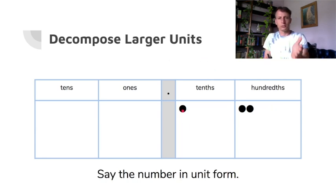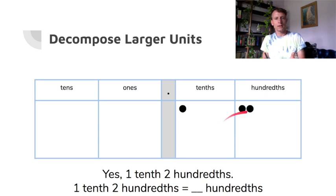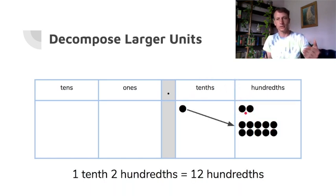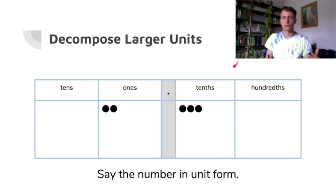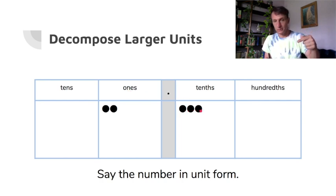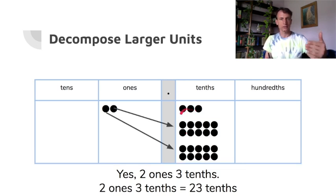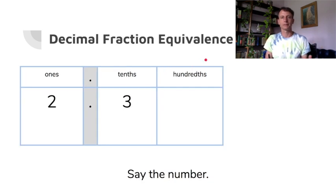Unit form: one tenth and two hundredths. What would that be all in hundredths? We take that dime and change it for pennies — that one tenth becomes ten hundredths, plus the two already there, for a grand total of twelve hundredths. Now with two ones and three tenths: those two ones are ten tenths each, so that's twenty plus the three already there — twenty-three tenths.